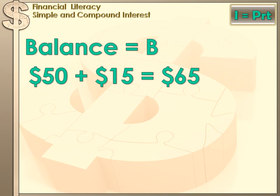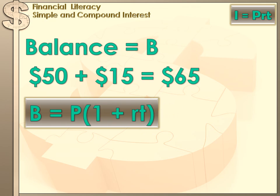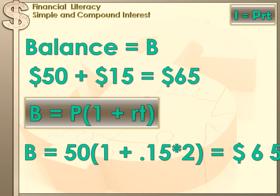There's another way to calculate balance using this formula: Balance equals principal times one plus the rate times the time — B = P × (1 + R × T). In the case of borrowing $50, the principal is 50, multiplied by one plus the interest rate of 0.15, times the two years the money was out. So 50 × (1 + 0.15 × 2) = $65.